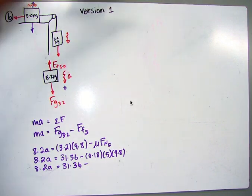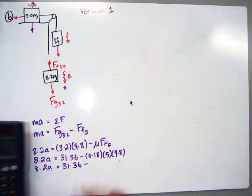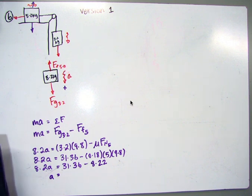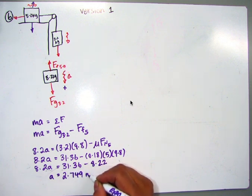But that was wrong, and let me re-put in the numbers that we were supposed to get. 0.18 times 5 times 9.8, and that equals 8.82. And that works out to 0.18, 5, no, 5 point 8.22. And then A works out to 2.749 meters per second squared.